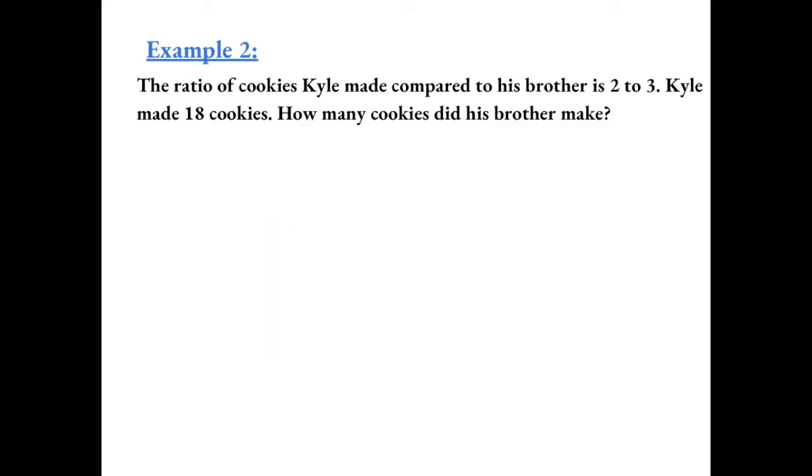Example 2. The ratio of cookies Kyle made compared to his brother is 2 to 3. Kyle made 18 cookies. How many cookies did his brother make?